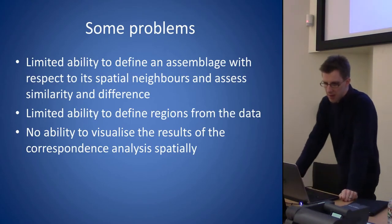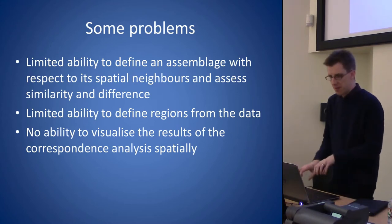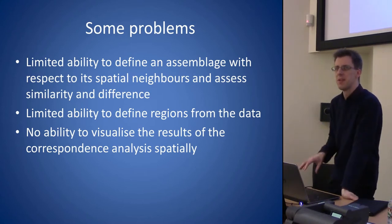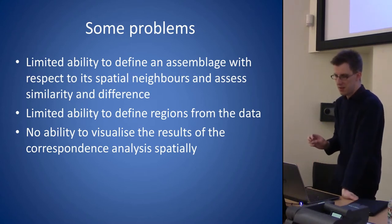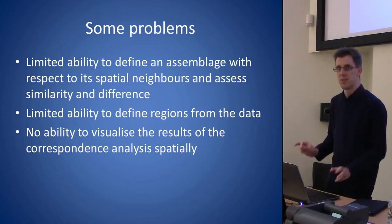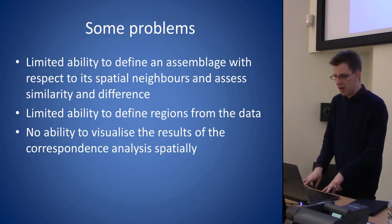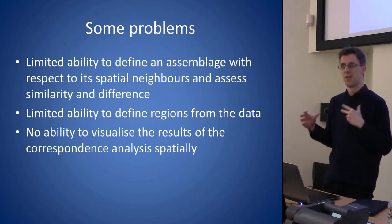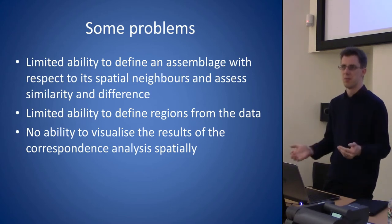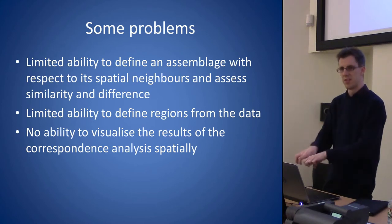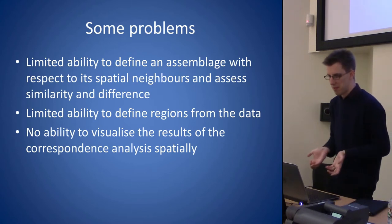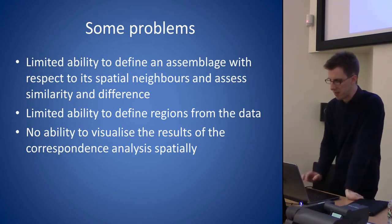So there are some problems with these correspondence analyses: there's limited ability to look at the relationship between spatial neighbours to see if they have similar assemblages, limited ability to use the actual data to define regions, and people are forcing regions onto the data whilst trying to draw regions out of them. We have no way of spatialising the results of the correspondence analysis.